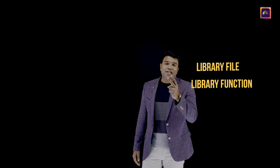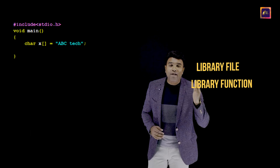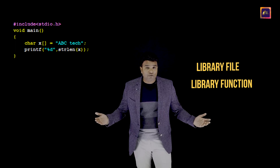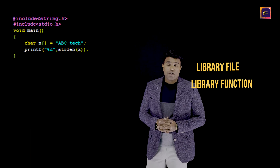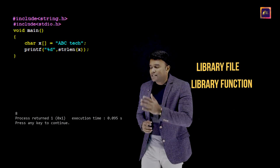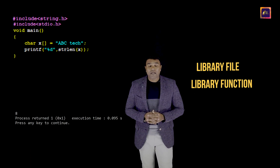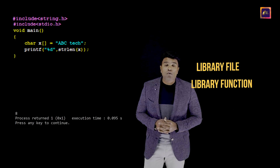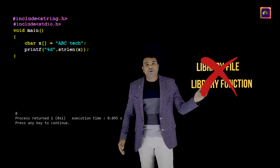In C, we have library functions that let us code this in just two lines. In the first line, I create a character array and store the data. In the second line, I use the built-in library function strlen(). To use strlen(), I also need to include the header file string.h. When executed, I get the correct length. However, in placement interviews, you are typically told not to use any library function — that's why I taught you the manual approach first.